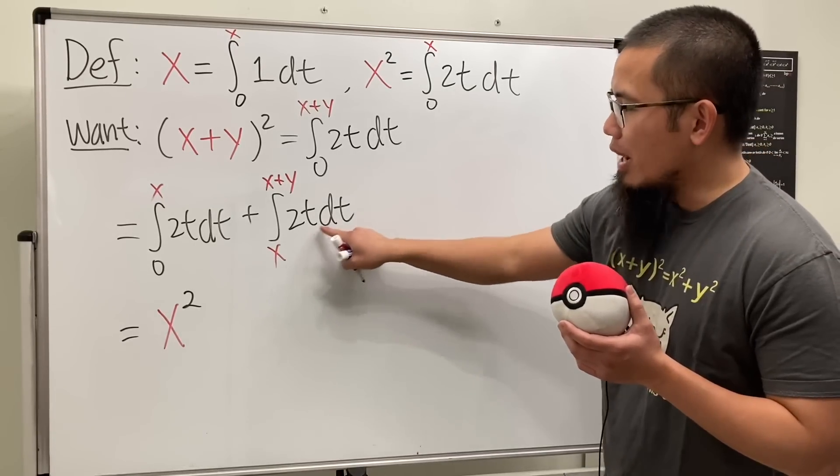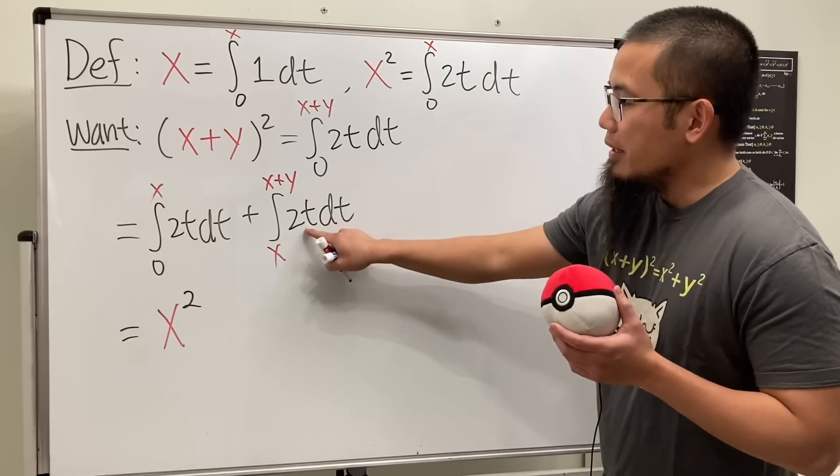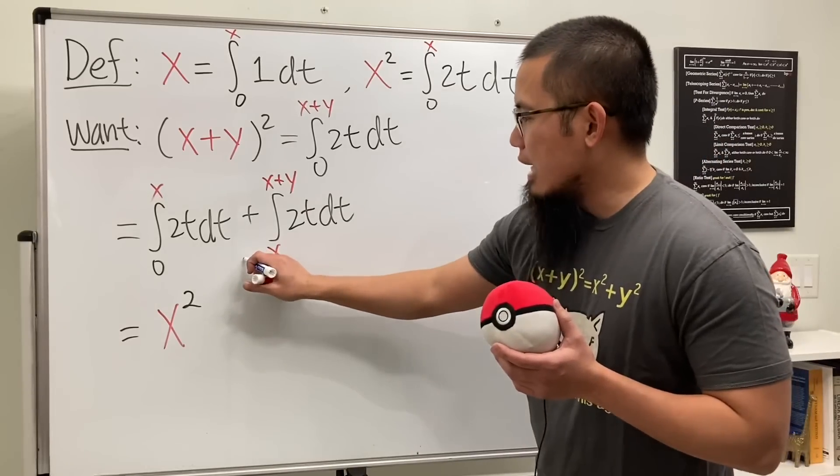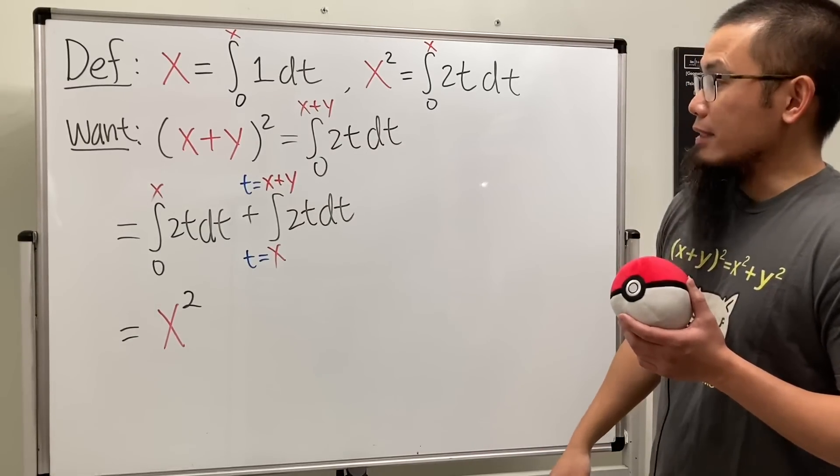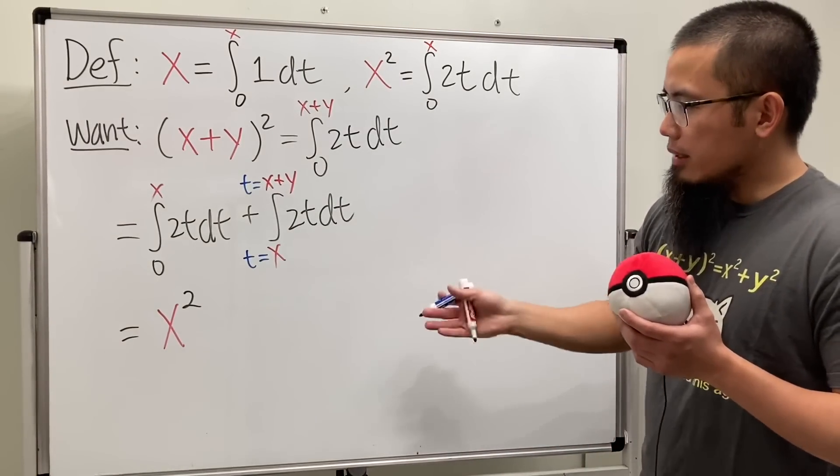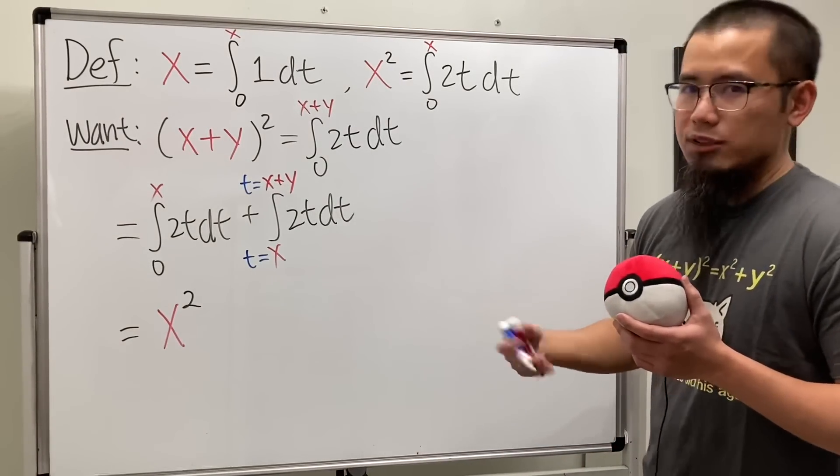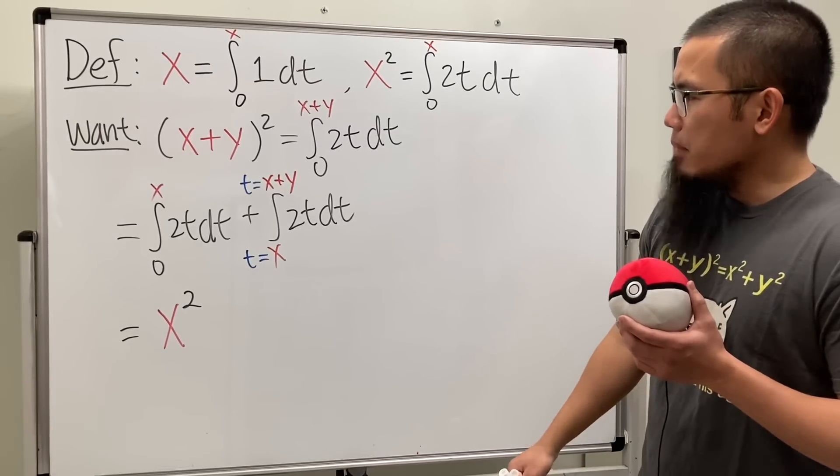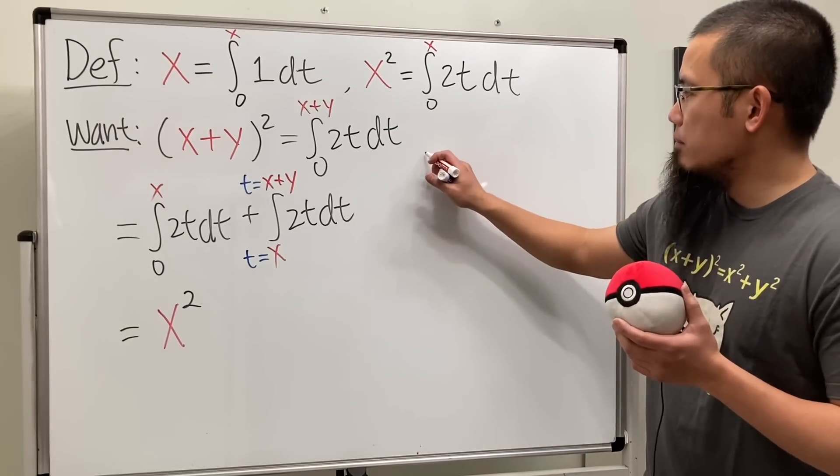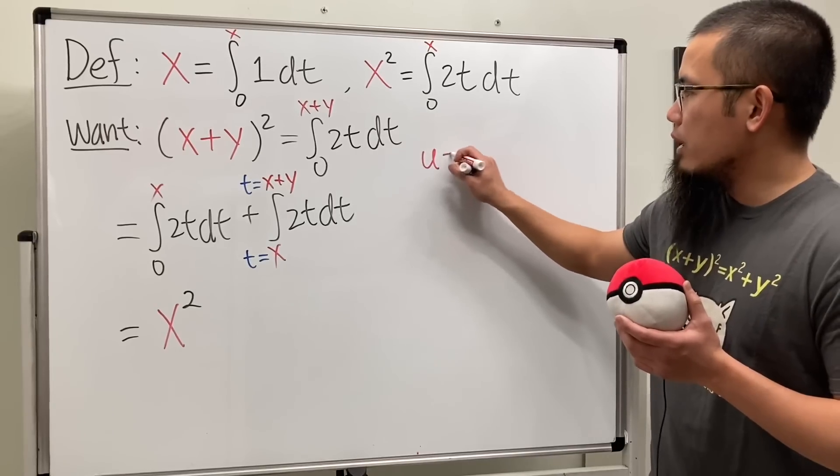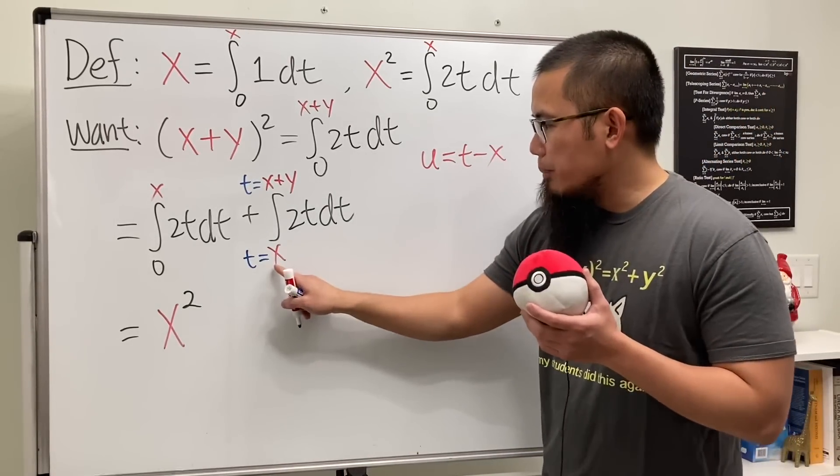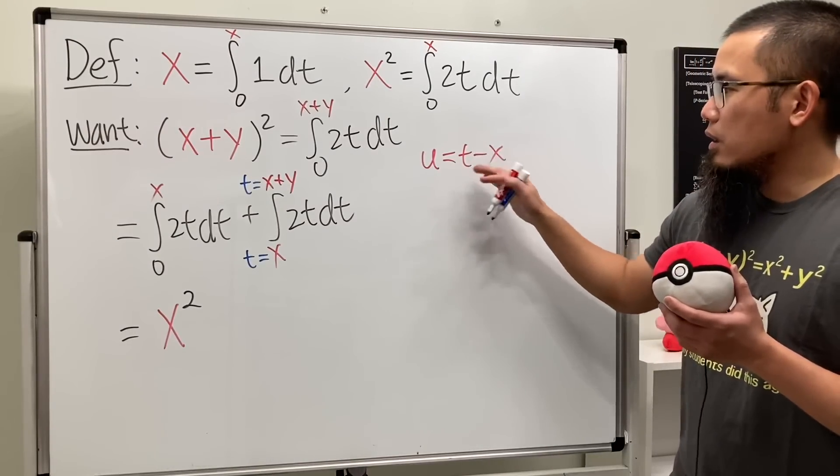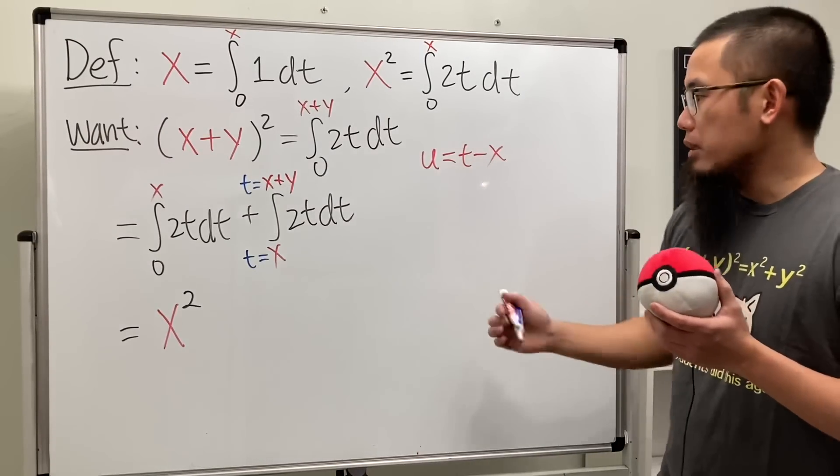And notice right here, we are in the t world. So this is actually t going from x to t goes to x+y. So t is the variable. x and y, they are just numbers. I'm actually going to do the following here. Let's make the substitution u, and I'm going to put u to be t-x. Because this way, when I put the x right here for the t, u will be going from 0, right? Cool.